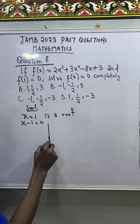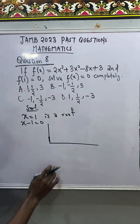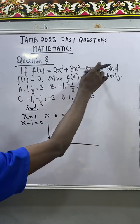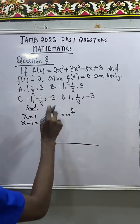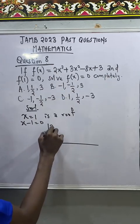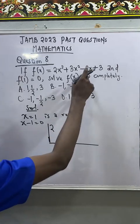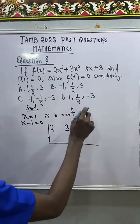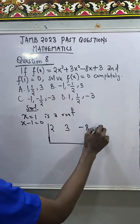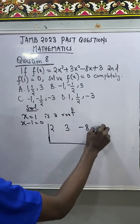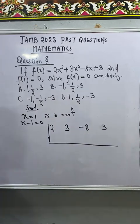Form a table like this. Put the coefficient of your polynomials inside this place. What was the first coefficient? 2. What was the second coefficient? Plus 3. What was the third coefficient? Minus 8. What was the last coefficient? Plus 3. I can remove the plus, but minus, I can't neglect it.